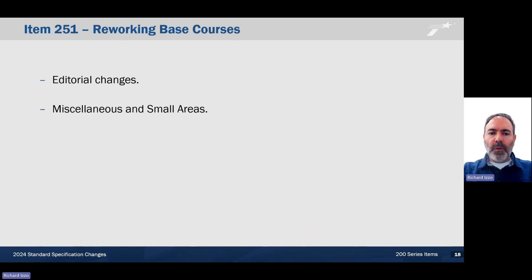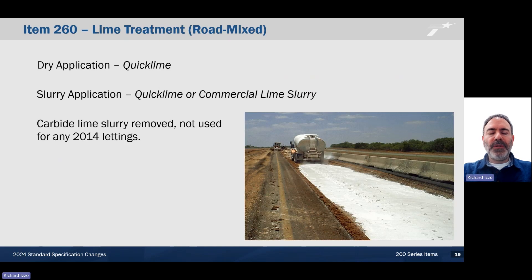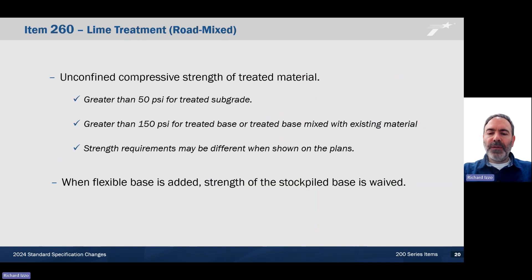Reworking base courses, Item 251: editorial changes, and we've added the miscellaneous and small areas language. Item 260, lime treatment road mix. When a dry application is required, quicklime must be supplied. When a slurry application is required, quicklime or commercial lime slurry is required to be supplied. Carbide lime slurry has been removed and has not been used for any 2014 lettings. Unconfined compressive strength of treated material has been added — we want to test the final product. It must be greater than 50 PSI for treated subgrade, greater than 150 PSI for treated base or treated base mixed with existing material. However, these strengths may be different when shown on the plans. When flexible base is added, strength of the stockpiled base is weighted.